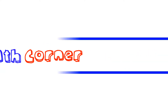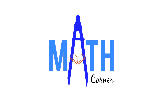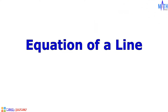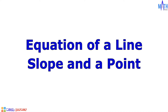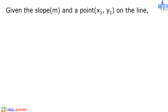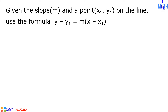Hello everyone. Welcome to Math Corner. In this video, we will find the equation of a line given the slope and a point. Given the slope denoted by m and a point x sub 1, y sub 1 on the line, we can use the formula y minus y sub 1 equals m times quantity x minus x sub 1 in finding the equation of the line. This formula is called point-slope form.